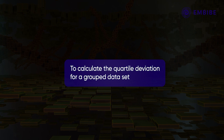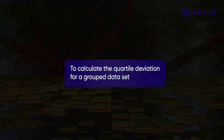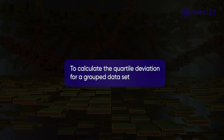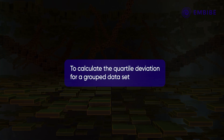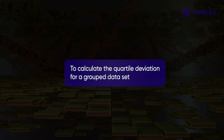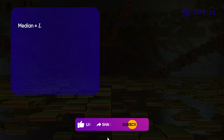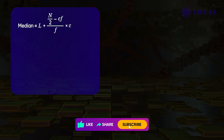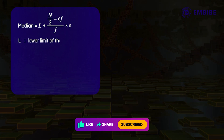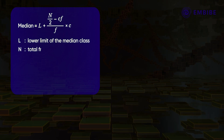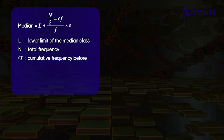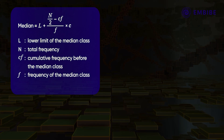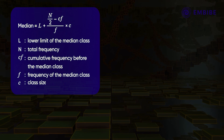Now let us see how to calculate the quartile deviation for a grouped data set. You may already be familiar with the formula for calculating the median, which is the second quartile. The formula is: Median = L + [(n/2 − cf) / f] × c, where L is the lower limit of the median class, n is the total frequency, cf is the cumulative frequency before the median class, f is the frequency of the median class, and c is the class size.